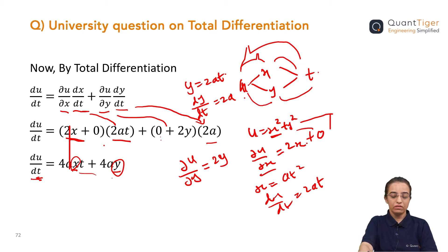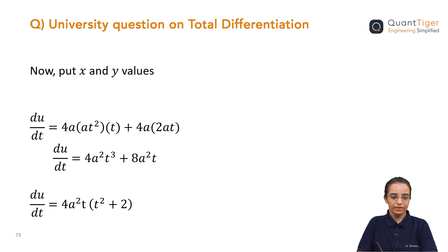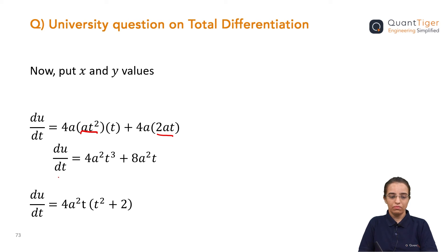We can replace x and y since we have their values: x is equal to at squared and y is equal to 2at. So instead of x and y, I substitute these values: 4a into at squared for x, and 4a into 2at for y. The whole answer should be in the form of t, since t is the variable with respect to which we are differentiating. So the final answer is du by dt equal to 4a squared t cubed plus 8a squared t.